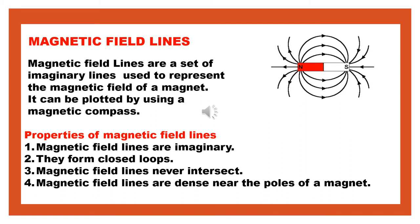When a bar magnet is brought near a compass, it exerts a magnetic force on the magnetic needle of the compass, causing the compass needle to deflect. This deflection can be plotted as lines known as magnetic field lines. You can see in the picture one bar magnet shown with certain lines surrounding it — these lines are called the magnetic field lines.